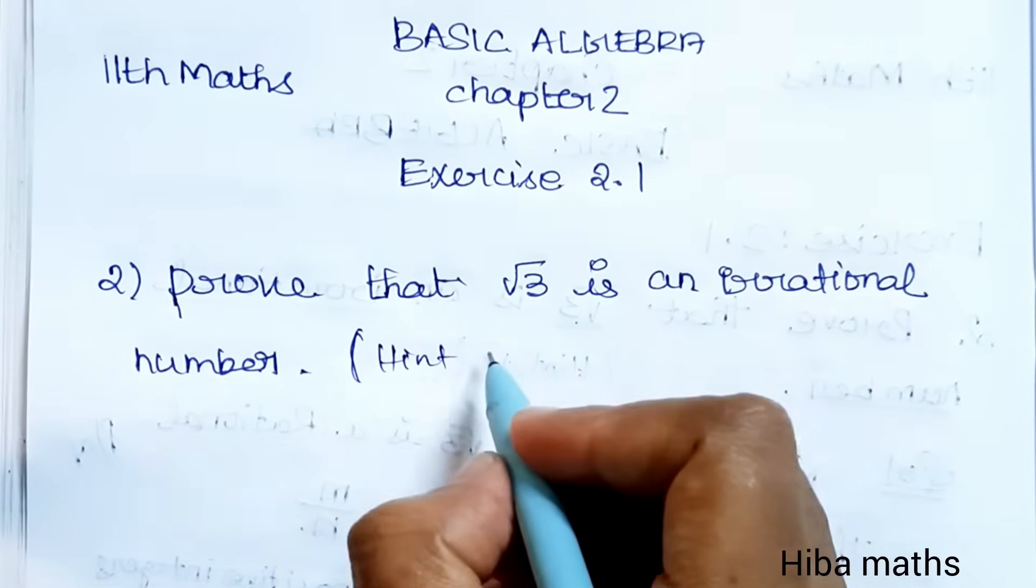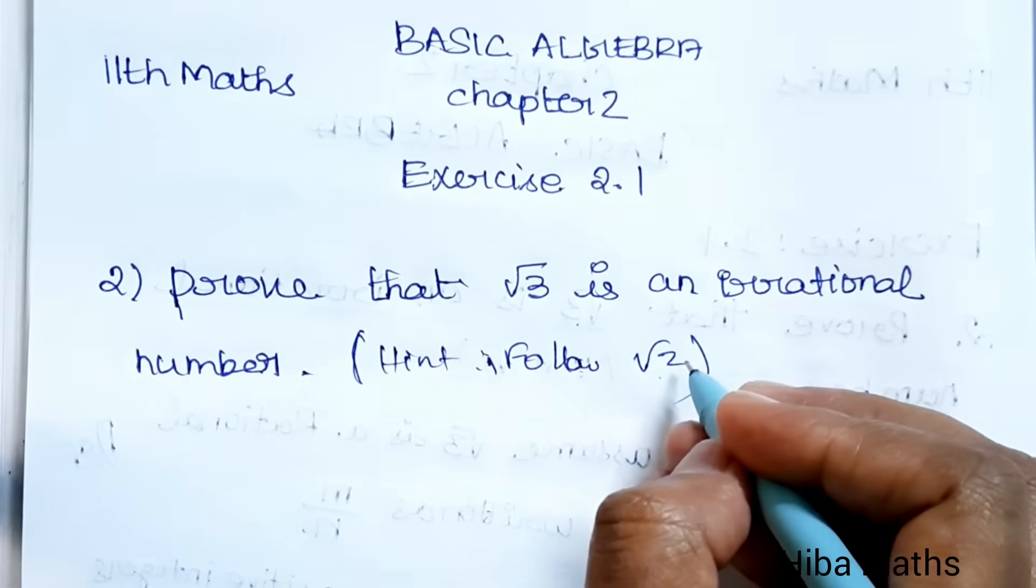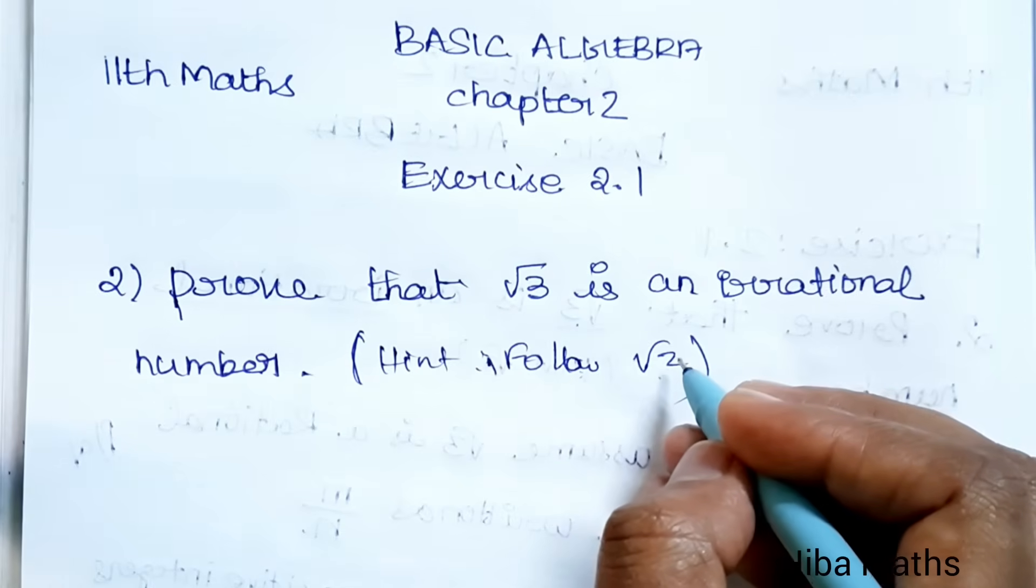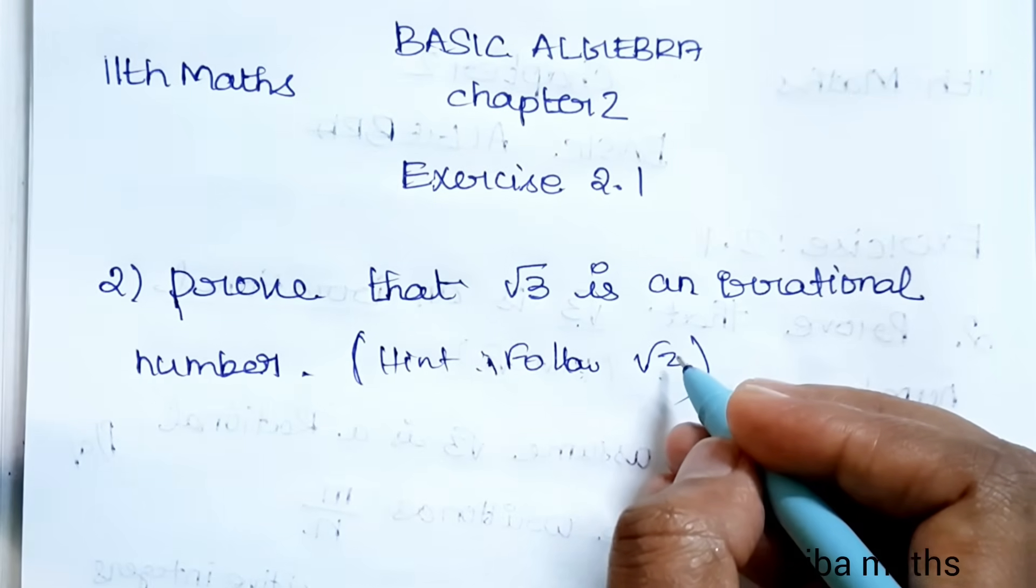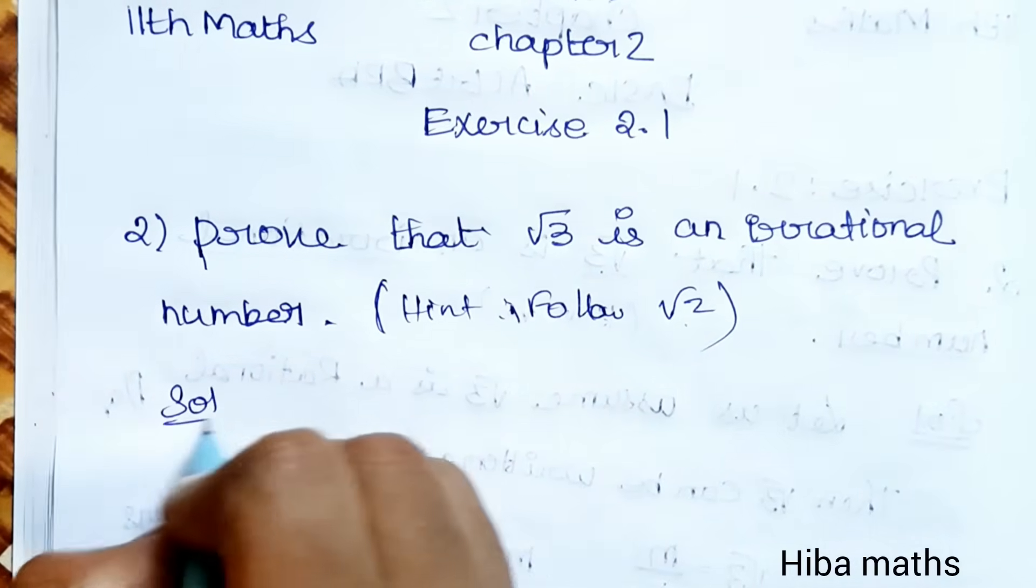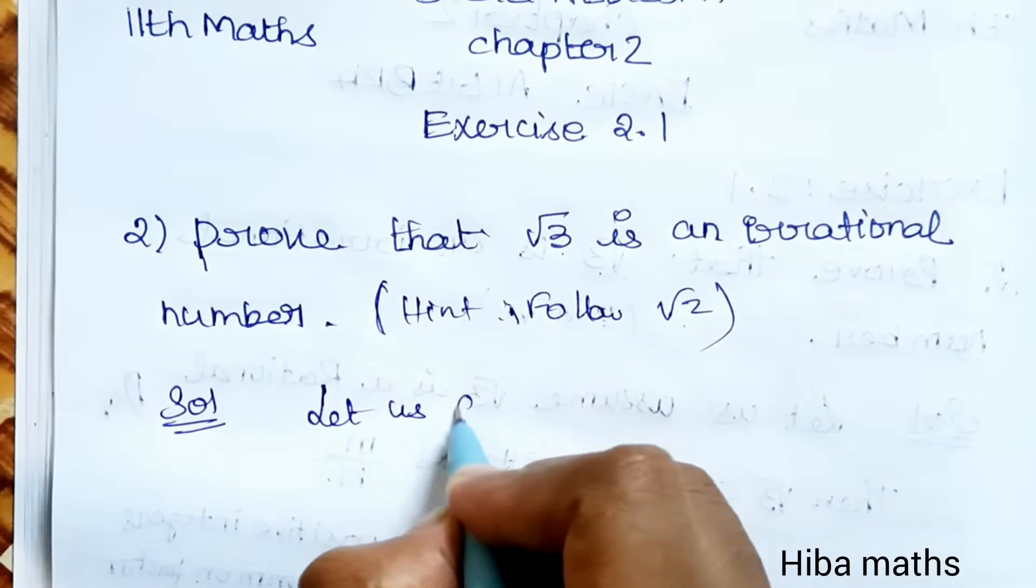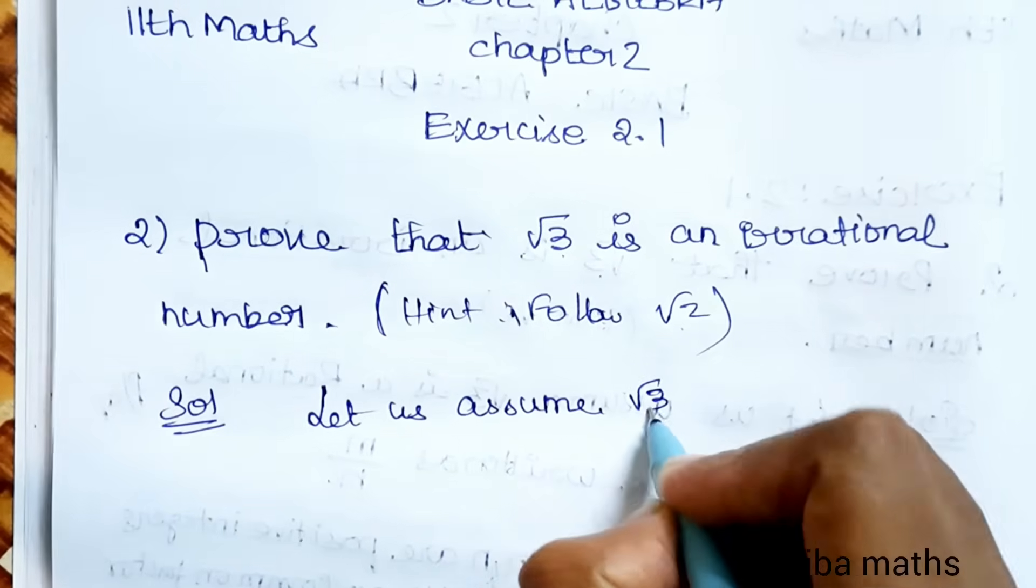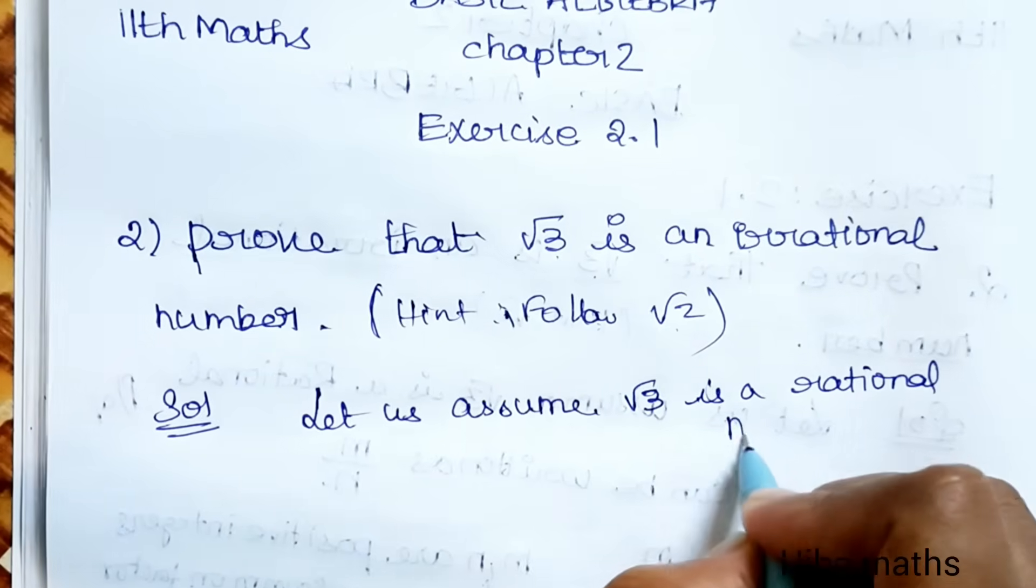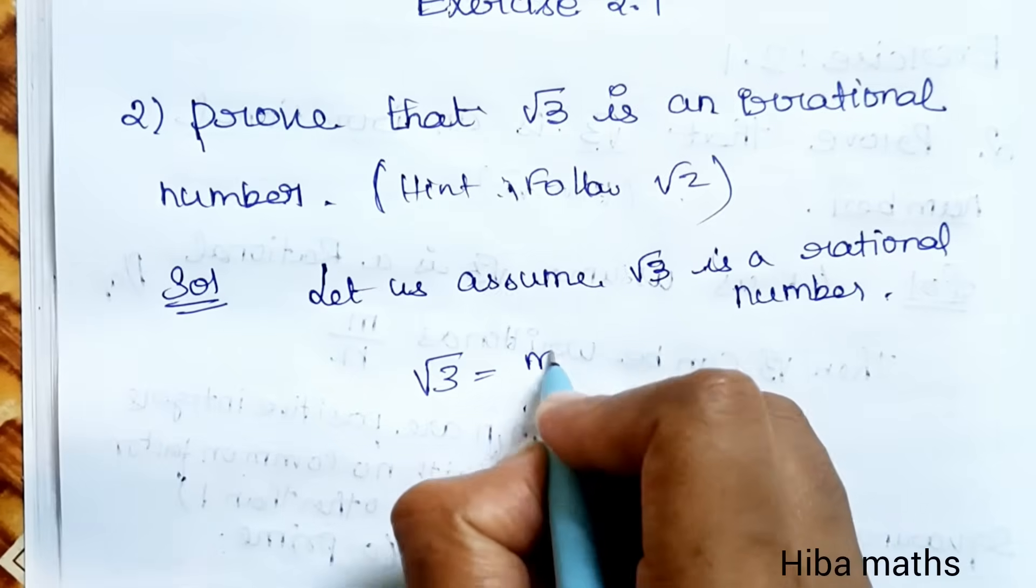Follow the method as we have done for root 2. Let us assume root 3 is a rational number. Rational number is in the format of numerator and denominator, so M by N.